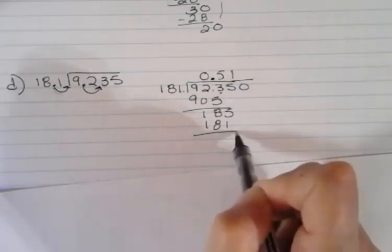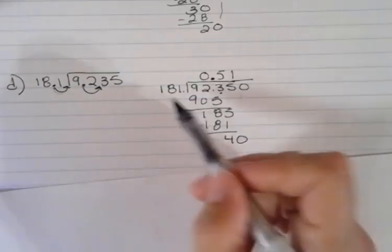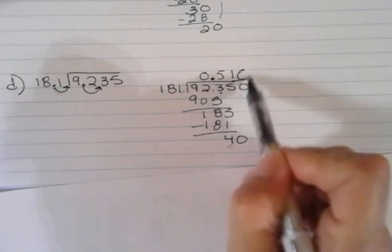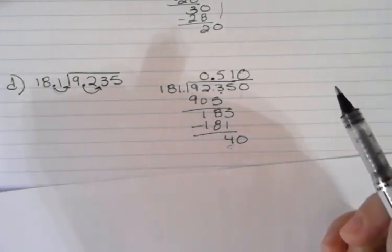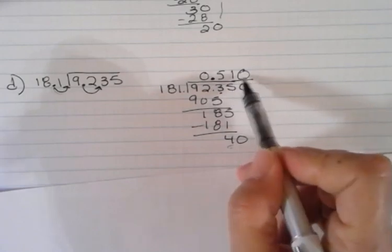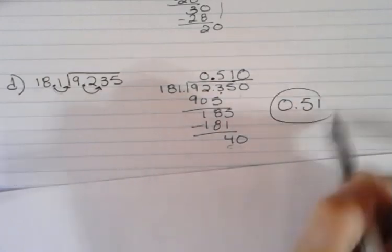I can see that 181 goes into 185 one time. That's what I can do in my head. Five minus one is four. Bring that down. 181 goes into 40 zero times. That's as far as I need to go because I'm only rounding to the hundredths. Because zero is here, that one doesn't change. My answer is zero and 51 hundredths.